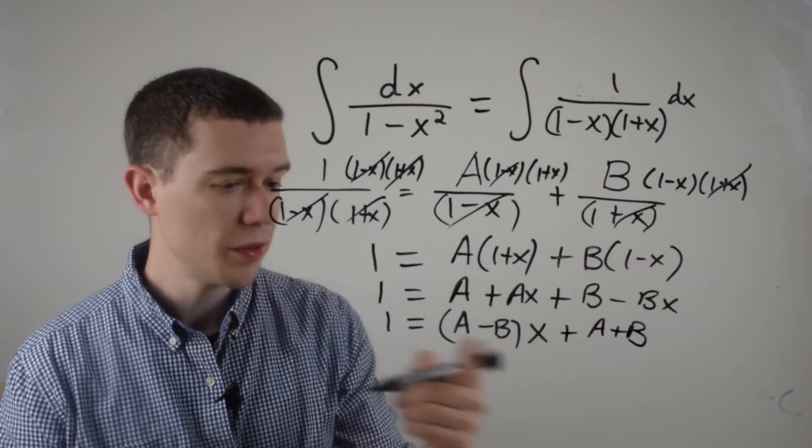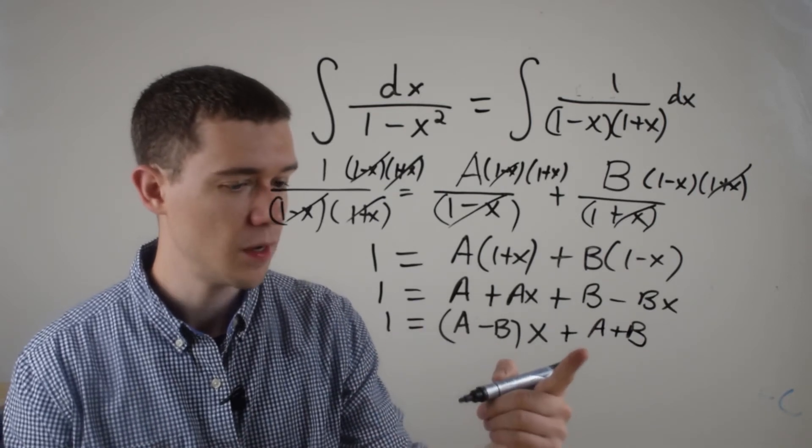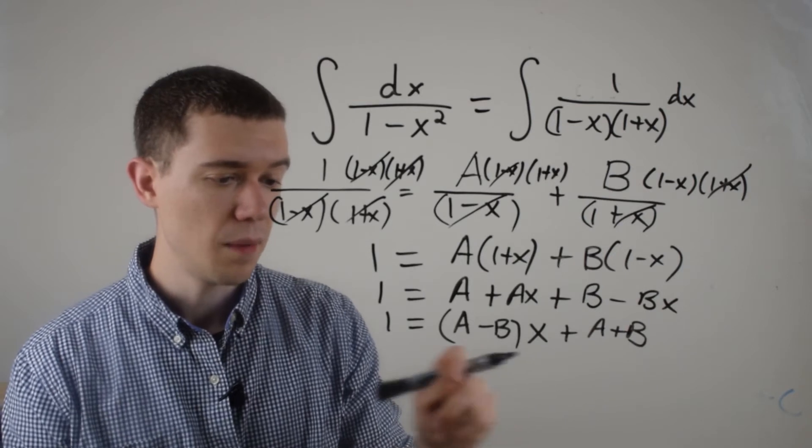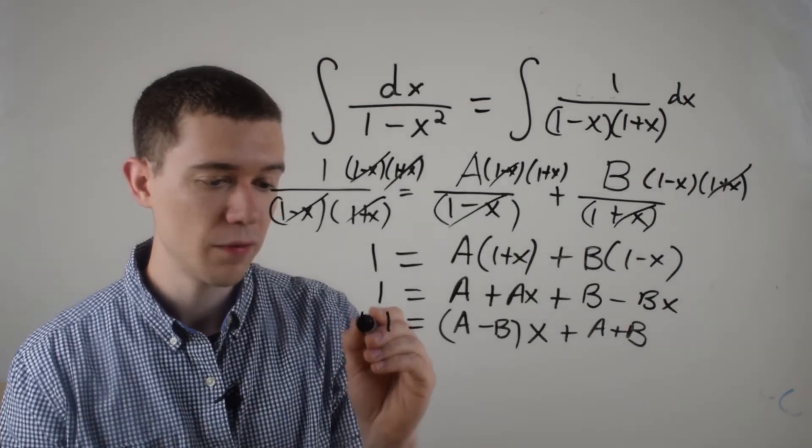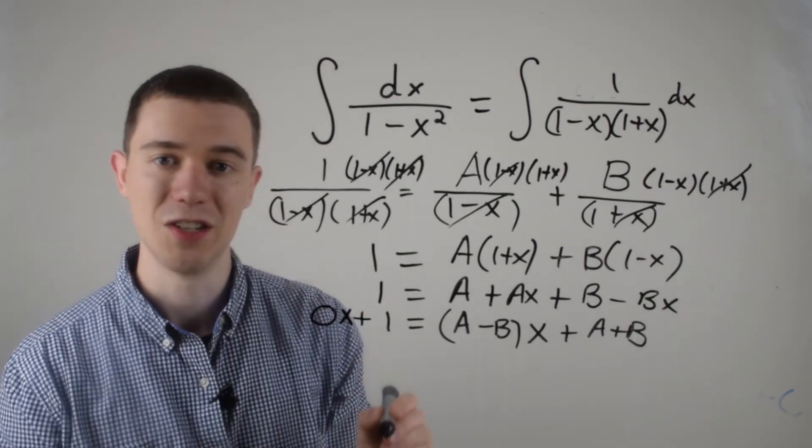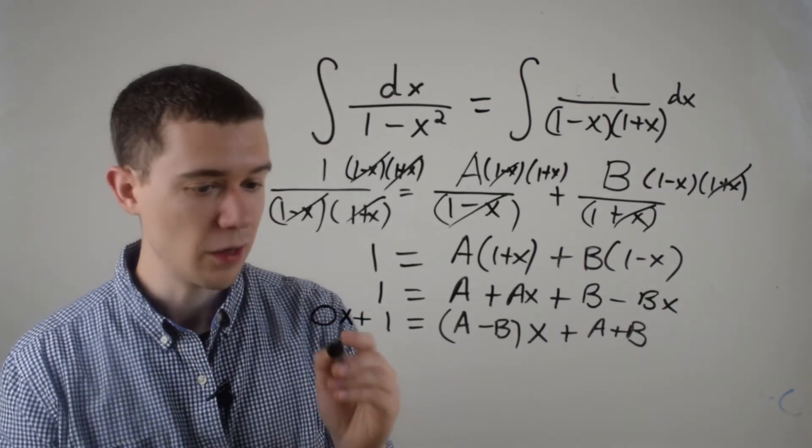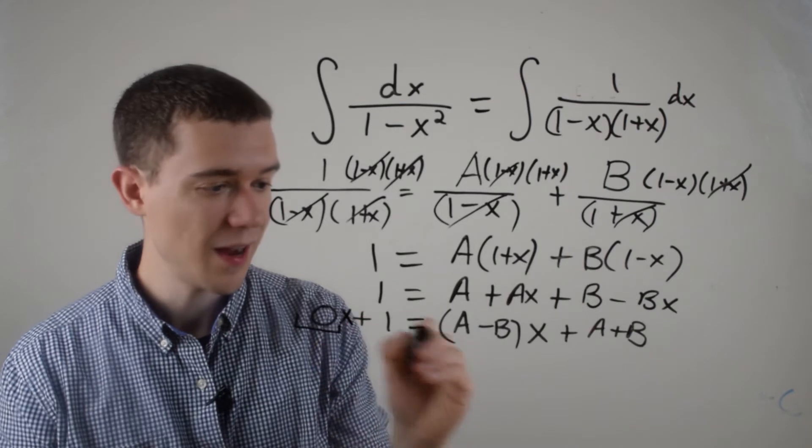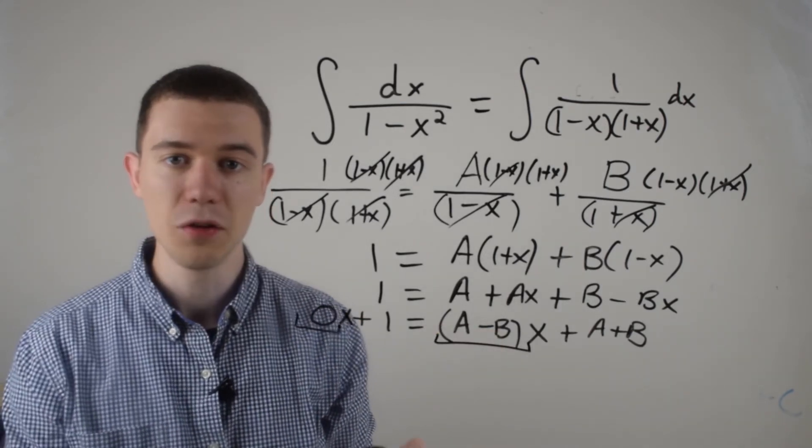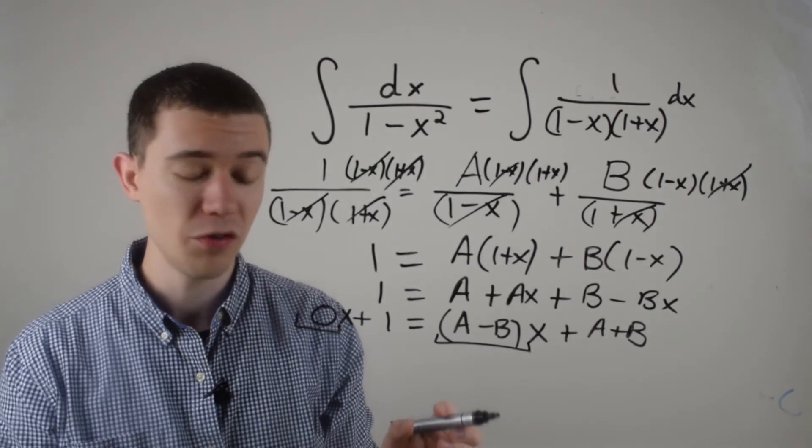Why am I doing this? Well, this is an equality. So whatever's on the left has to equal whatever's on the right. Meaning, whatever the coefficients are, maybe I'll insert a plus 0x just for some emphasis here. The coefficient of x has to match the coefficient of x on the other side. In other words, I'm matching the coefficients.